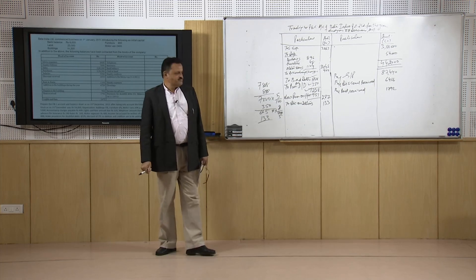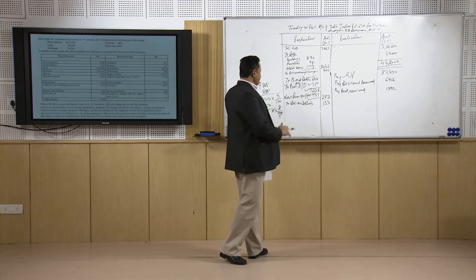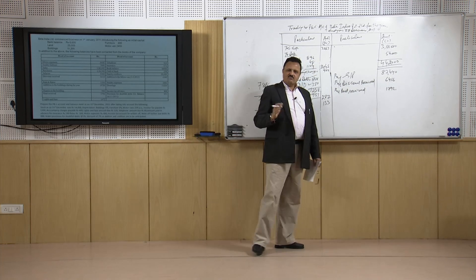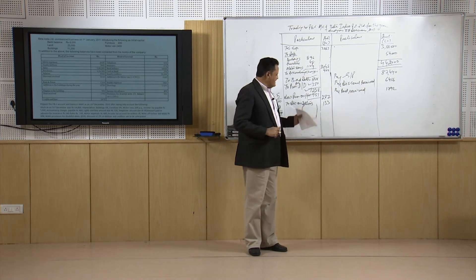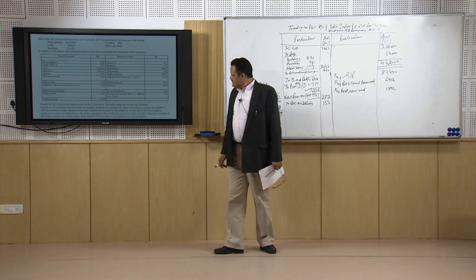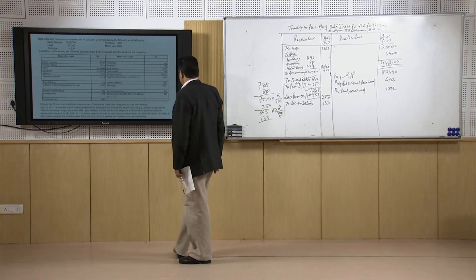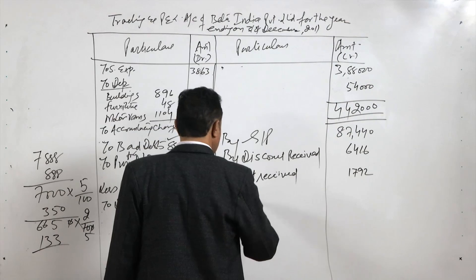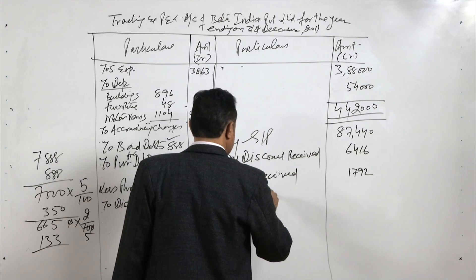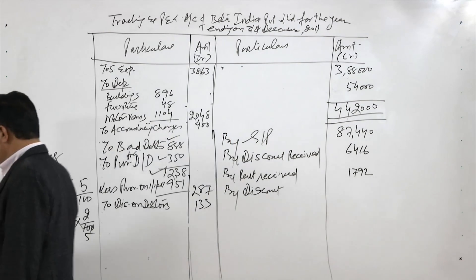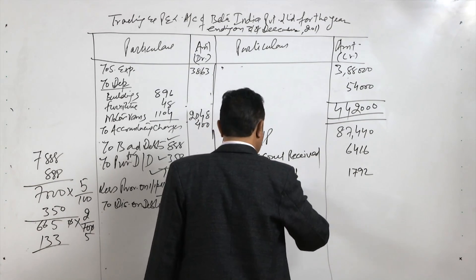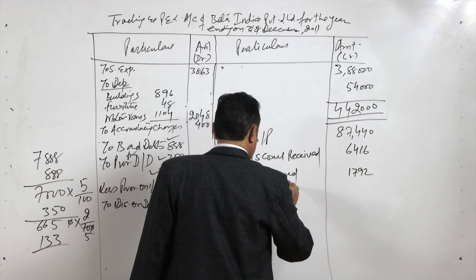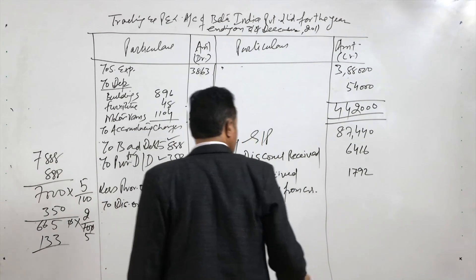At the same time, this firm is expecting discount from its creditors also. As they are giving discount to debtors it is a loss, but from creditors they will receive a gain. The amount of sundry creditors is 20,000 and 2 percent of that is 400 rupees. So discount from creditors is going to be 400 rupees income.